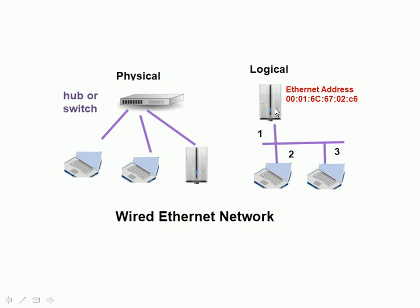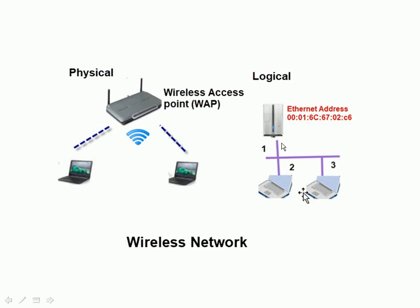So logically, it's using shared media — the cable is the shared media. If we look at a wireless network, it's basically the same. This time we have a wireless access point rather than a switch or a hub, but it functions the same as a wired switch or hub. Usually, these wireless access points have an Ethernet hub at the back, so you'll see ports where you can plug wired Ethernet in. And again, logically it looks the same — it looks like it's sharing the same cable.